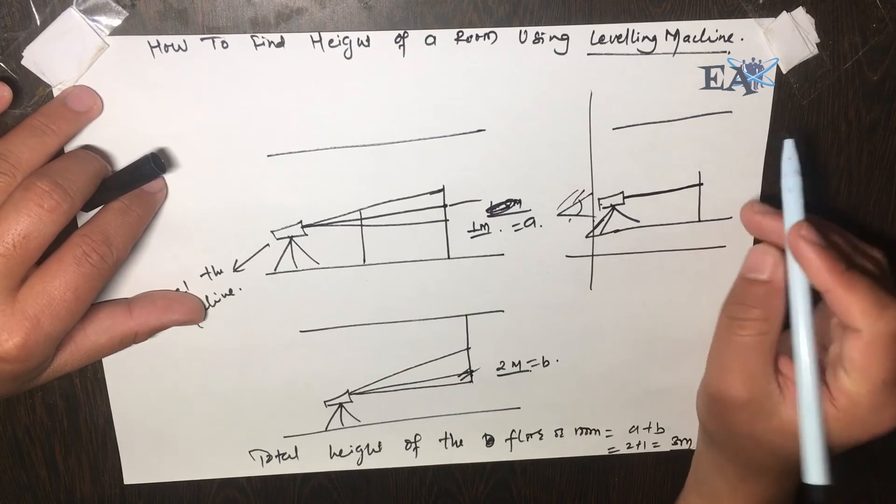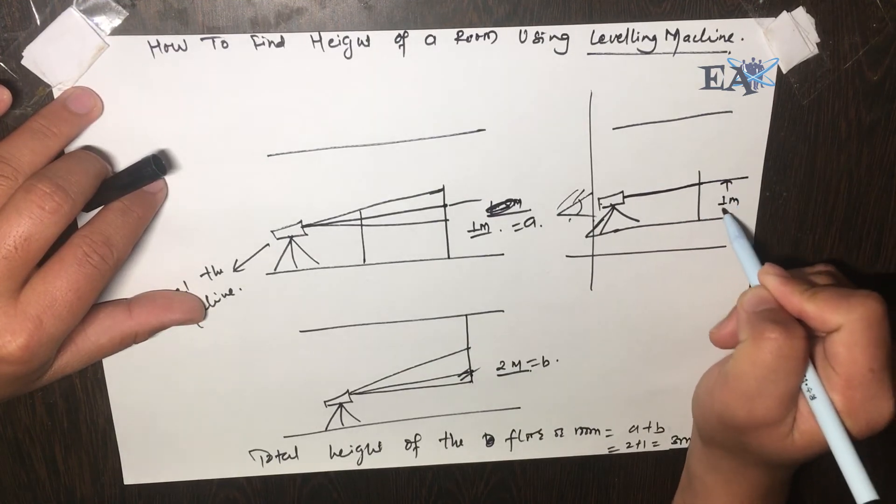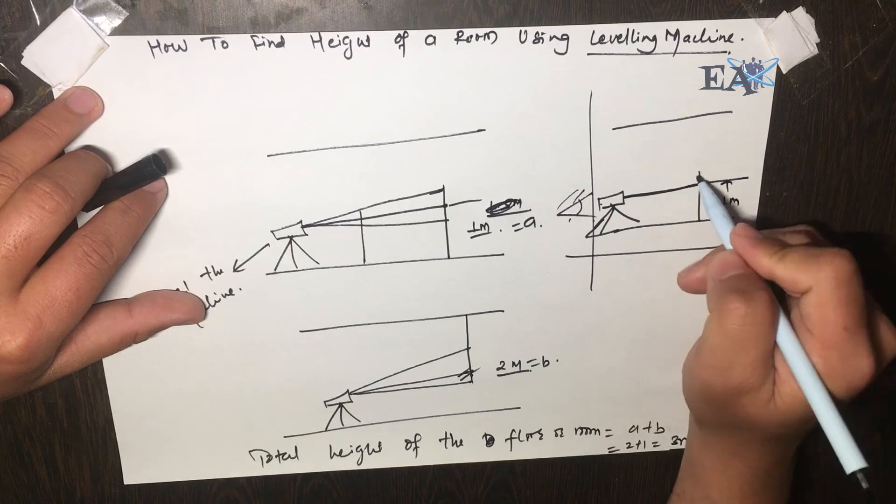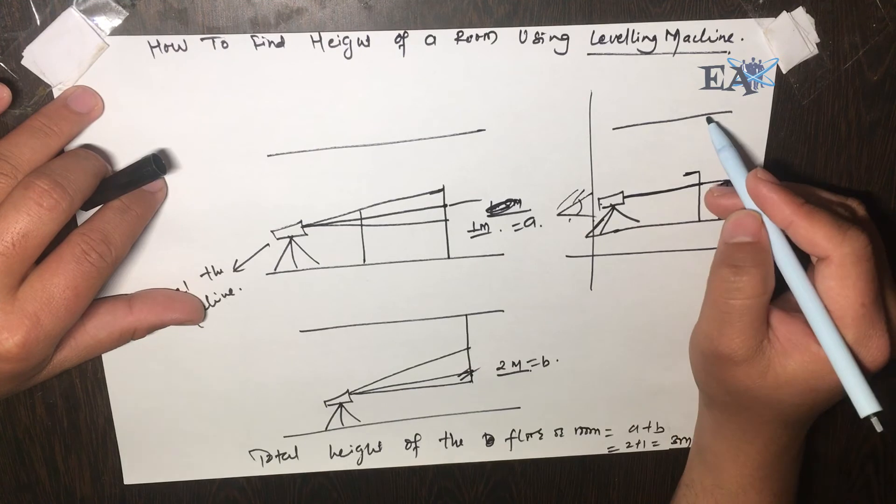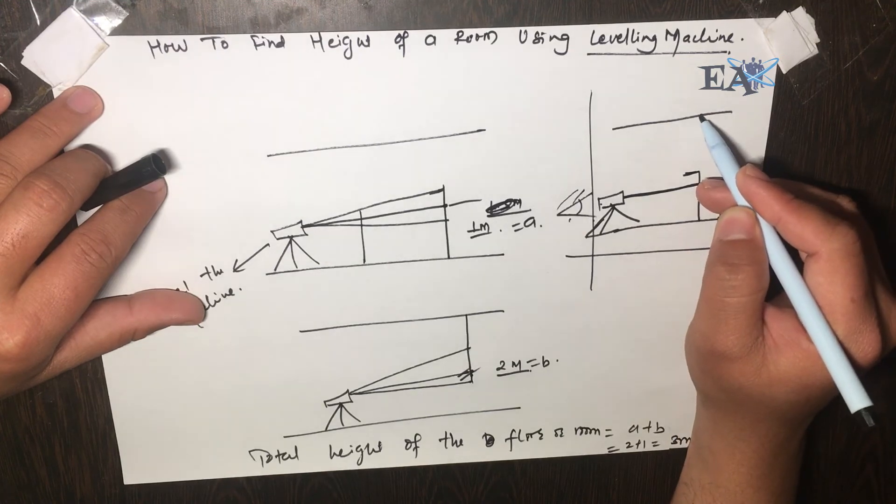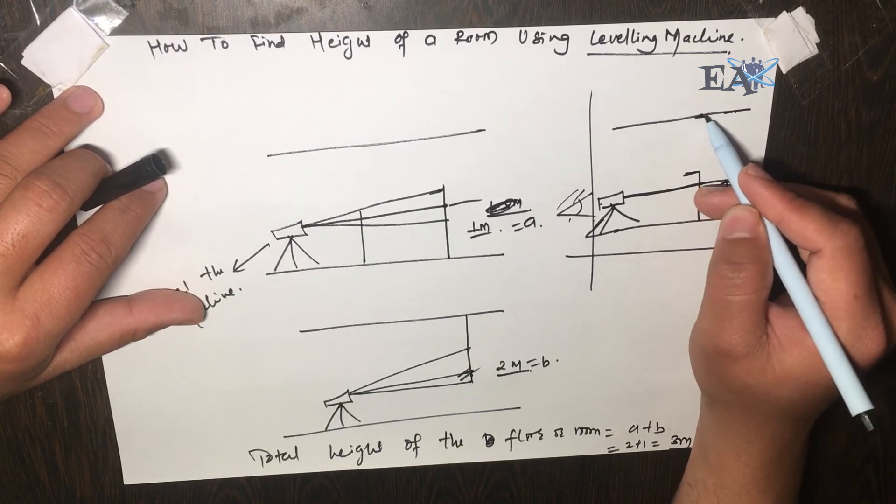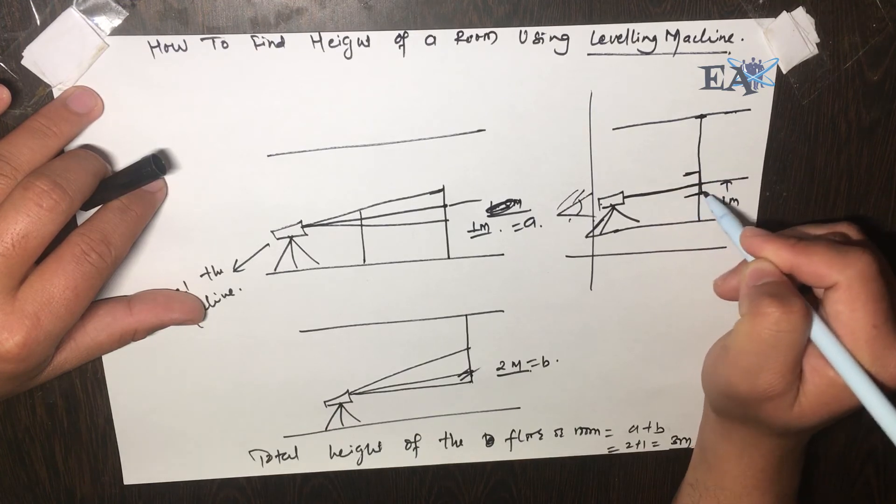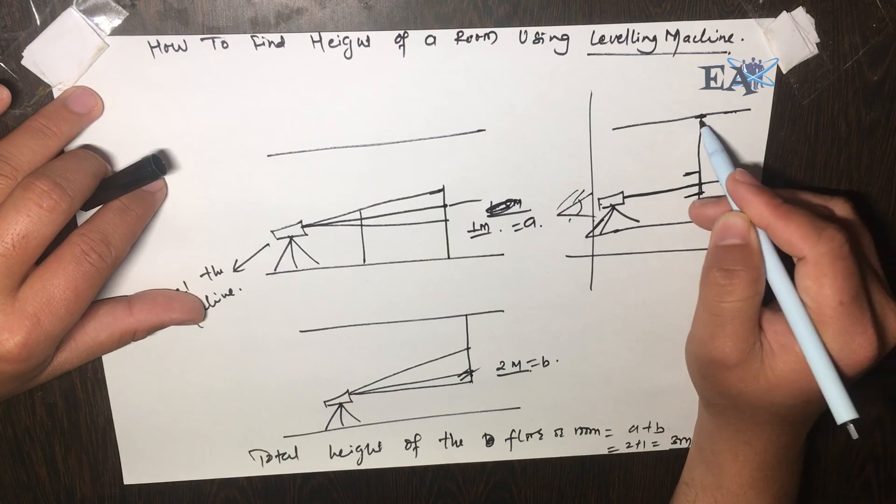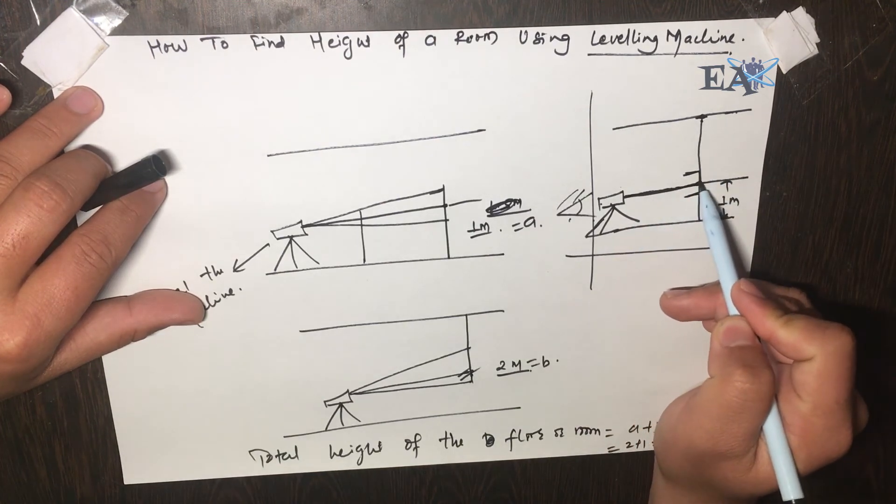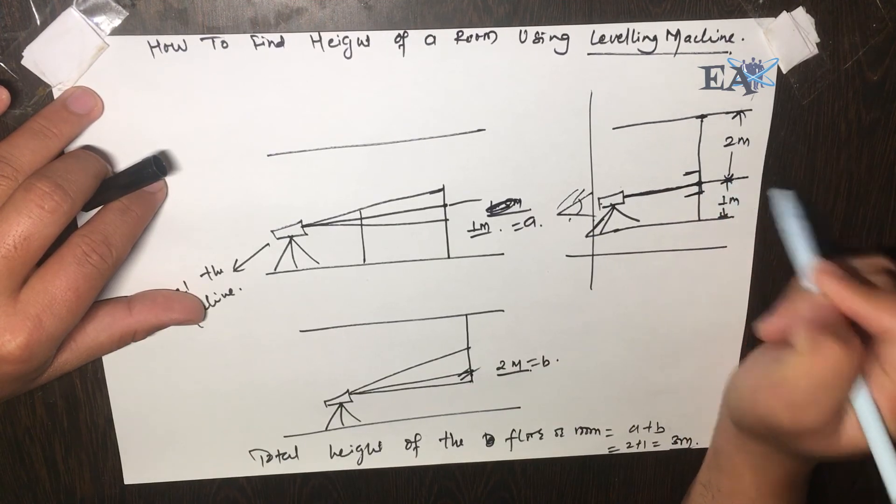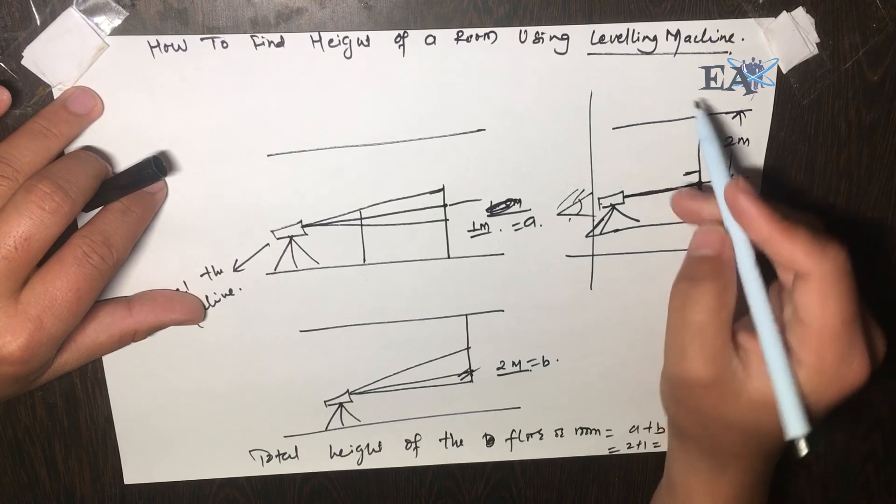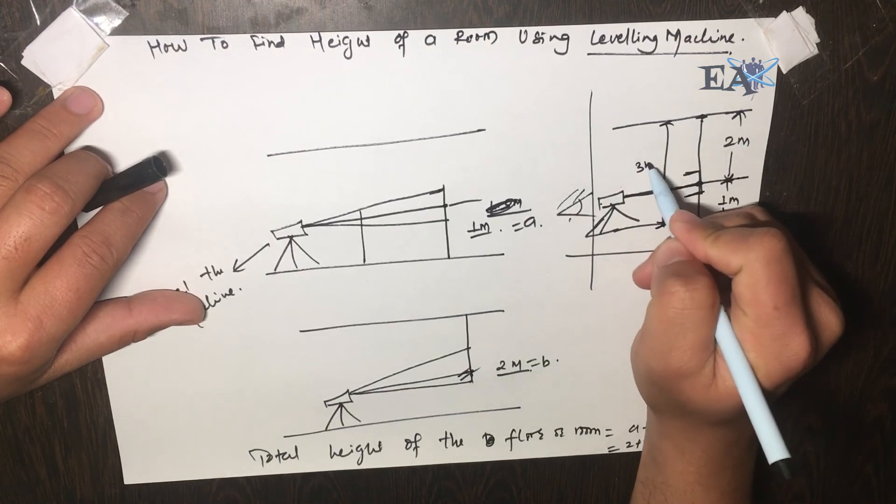In that situation we take the reading as 1 meter at the top of the staff. After that we invert the staff and place it anywhere. The top reaches somewhere here. Now we take another reading at this point, which is suppose 2 meters. So the total height is 2 plus 1, that is 3 meters.